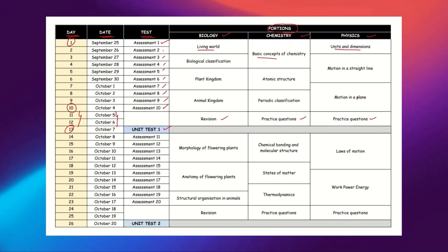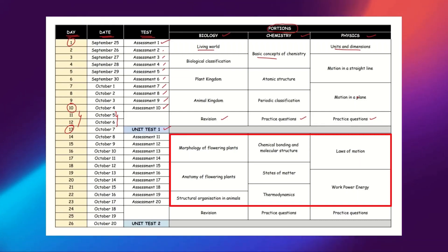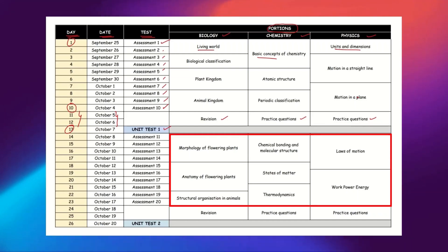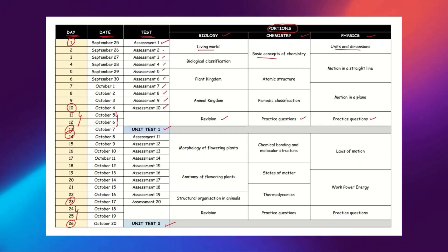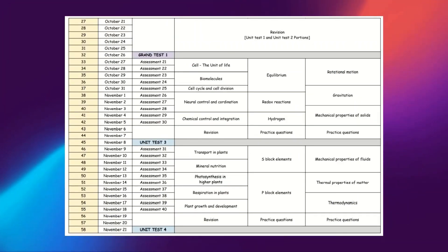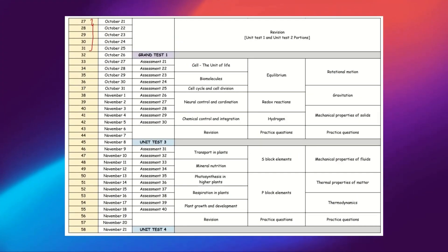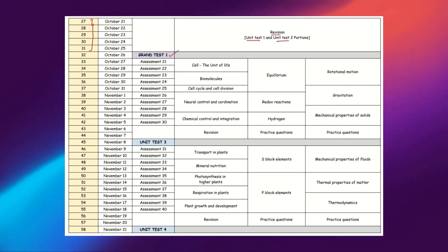Once you complete Unit Test 1 on Day 13, you move on to Part 2 syllabus. You will study Part 2 chapters from Day 14 to Day 23, then get two days for revision, and write Unit Test 2 on Day 26. After completing Unit Tests 1 and 2, you get five days to revise both parts, and then you write Grand Test 1 for Part 1 and Part 2 portions on Day 32.